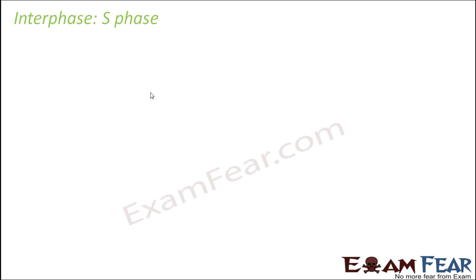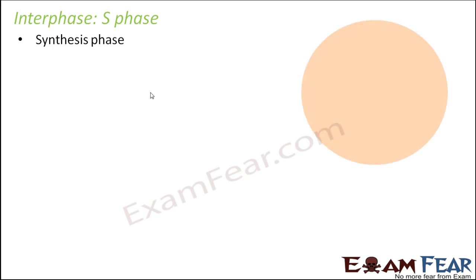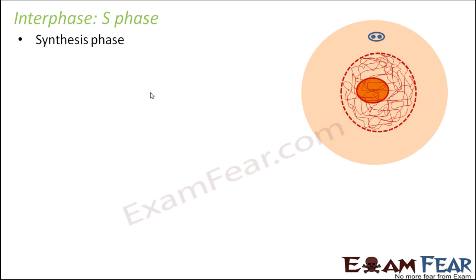The next phase is the S phase, also known as the synthesis phase. Synthesis means to manufacture or prepare something, and this is a very important phase because it is here that DNA synthesis takes place. DNA is the genetic material. If we want the cell to divide, the cell should have multiple copies of DNA so that each copy can be distributed to each daughter cell. So the copying or duplication of DNA takes place in the synthesis phase. DNA replication takes place inside the nucleus, within the chromatin threads.